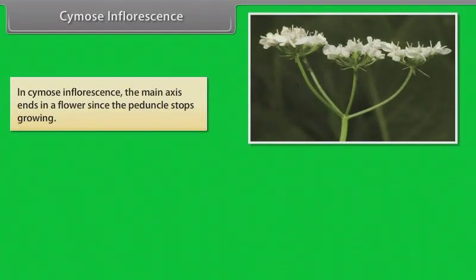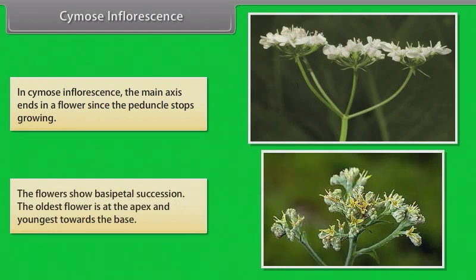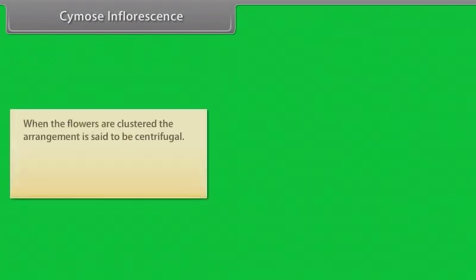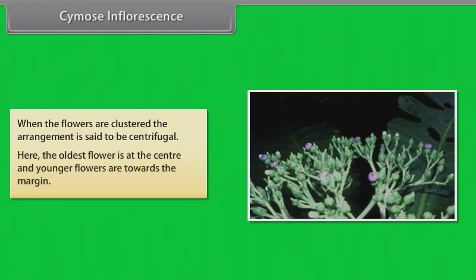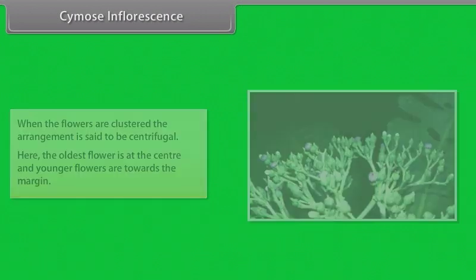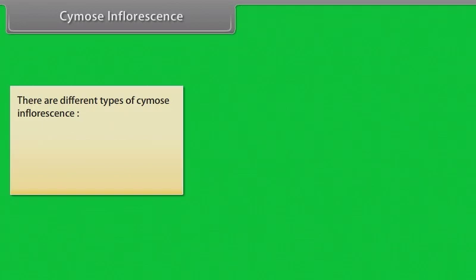In cymose inflorescence, the main axis ends in a flower since the peduncle stops growing. The flowers show basipetal succession — the oldest flower is at the apex and the youngest towards the base. When the flowers are clustered, the arrangement is said to be centrifugal, where the oldest flower is at the center and younger flowers are towards the outside.